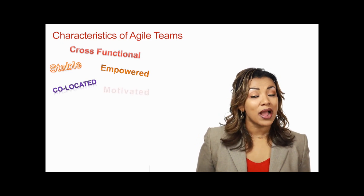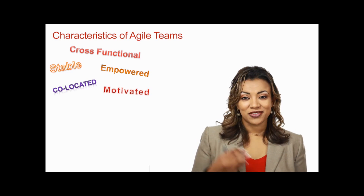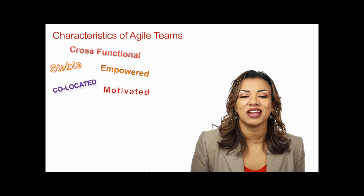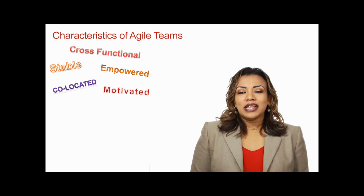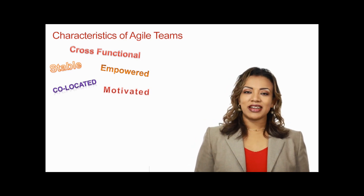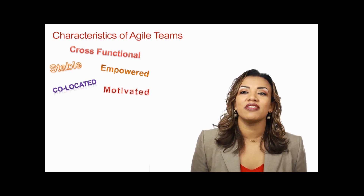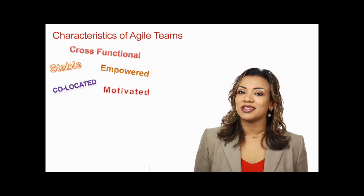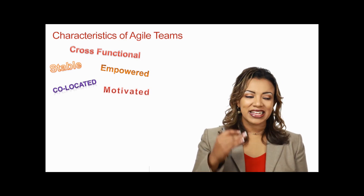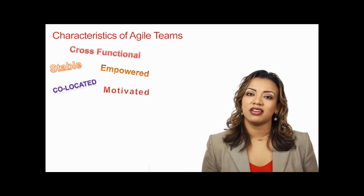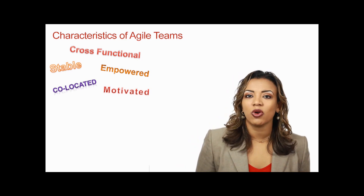Agile Teams are also highly motivated, which means they are inspired, they have a vision, they have a purpose, and they are really trying to get something done. It's not about waiting to ask your boss what to do next — it's more like: let's get this done. We committed to this iteration. We promised the product owner that we're going to get these stories done. So what can we do together to really accomplish that goal?